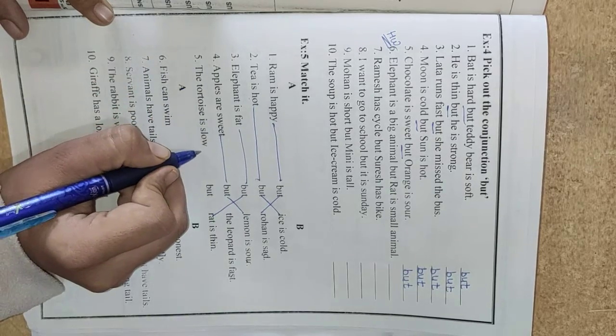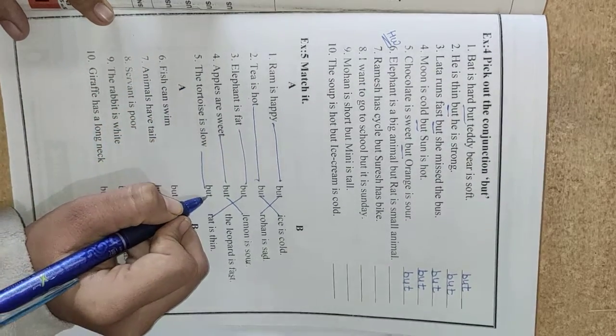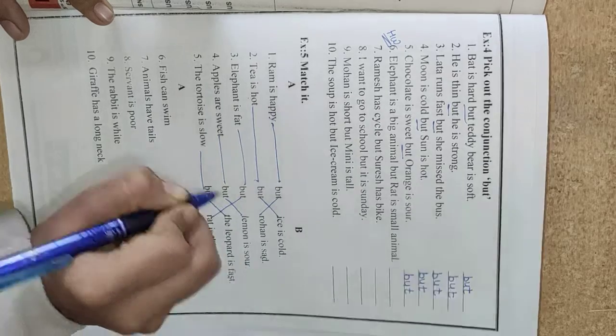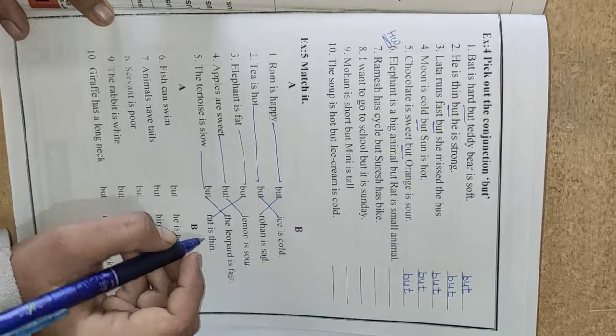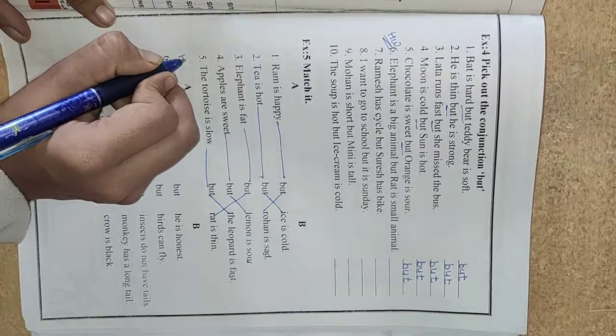Number 5. The tortoise is slow but the leopard is fast. Slow and fast are opposite. In the same way, you have to do this match the following in your homework.